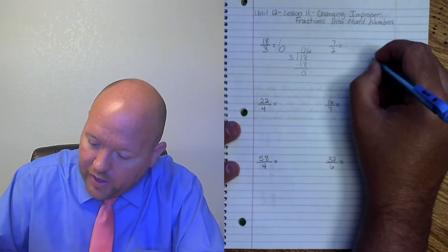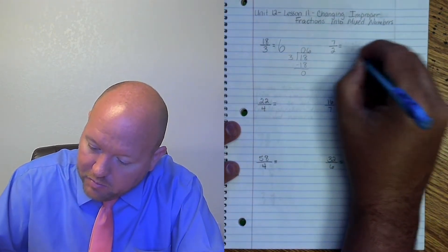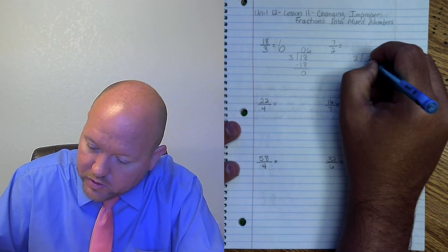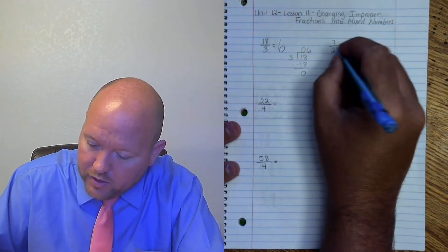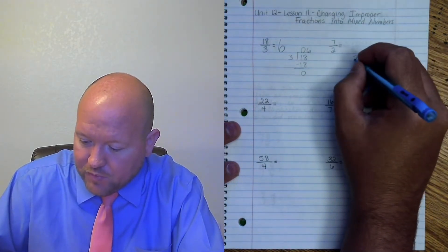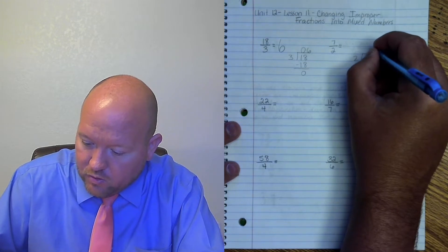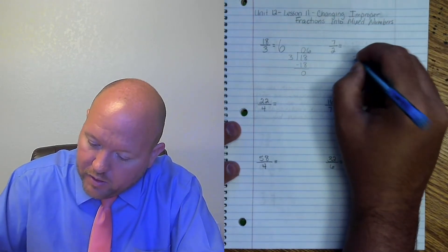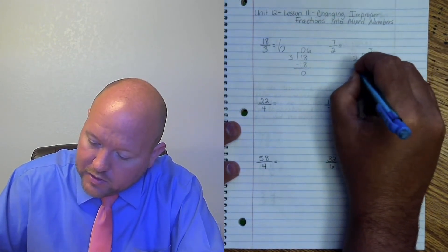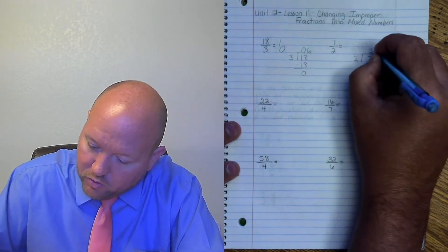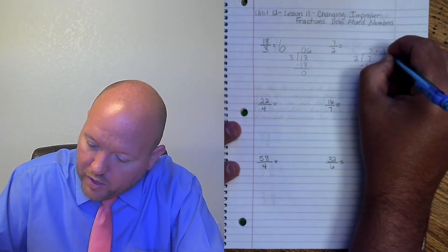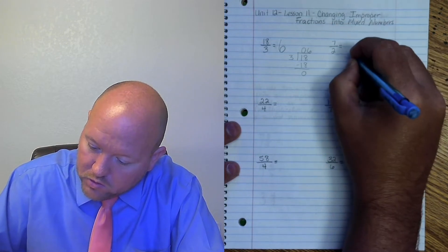Here we have 7 divided by 2. So 7 goes inside the box, 2 is right here. Remember that bar right there means divide. 2 goes into 7 three times. 3 times 2 equals 6. 7 minus 6 is 1. So I have remainder 1 triangle circle square.